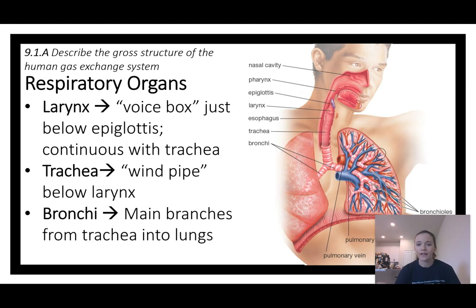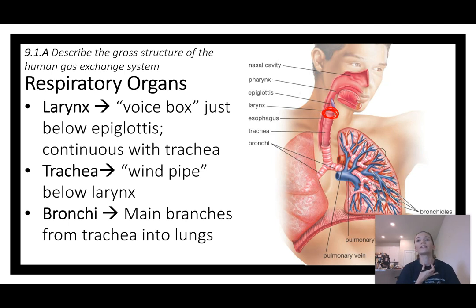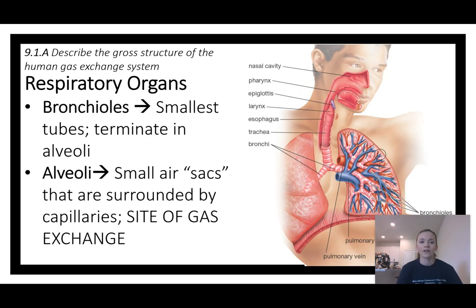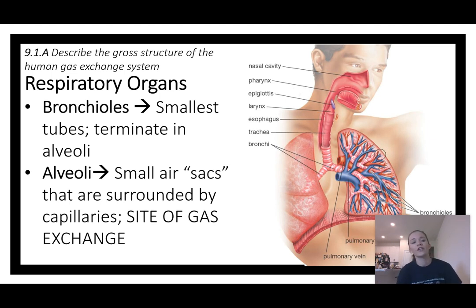The larynx is your voice box, right at the front of your throat. It's continuous with the trachea — once air gets into your chest cavity it's called the trachea, but it's essentially the same tube. The bronchi then branch into your two lungs, continuing as one tube that gets narrower and narrower. Bronchi branch into smaller bronchi, similar to veins branching into venules — branch, branch, branch — until you reach the bronchioles.